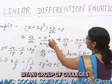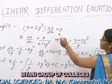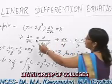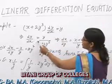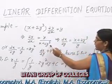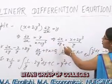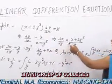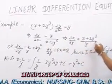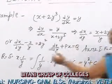For example, (x plus 2y cubed) times dy/dx is equal to y, or dy/dx equals y divided by (x plus 2y cubed), or dx/dy equals (x plus 2y cubed) divided by y.